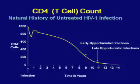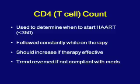Viral load also determines when to start therapy. Viral load measures the amount of virus in the body — normally zero if uninfected, but could be as high as a million. We start therapy if the viral load is over 100,000 copies per ml. So a CD4 count less than 350 or a viral load greater than 100,000 are the two current considerations for starting medications.